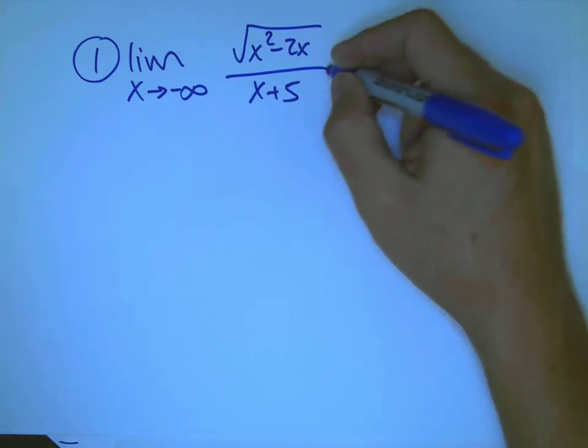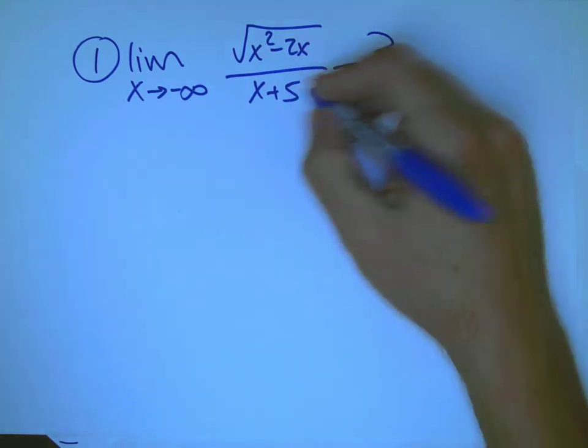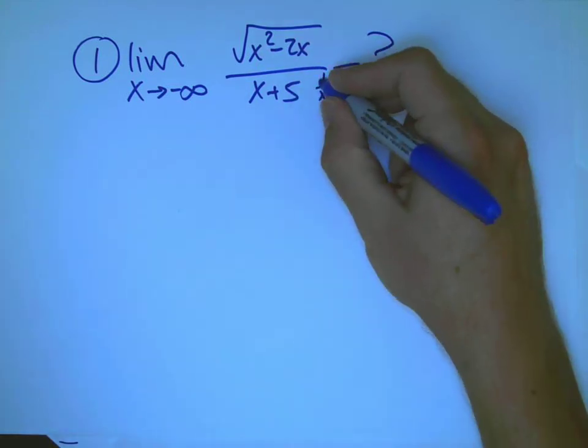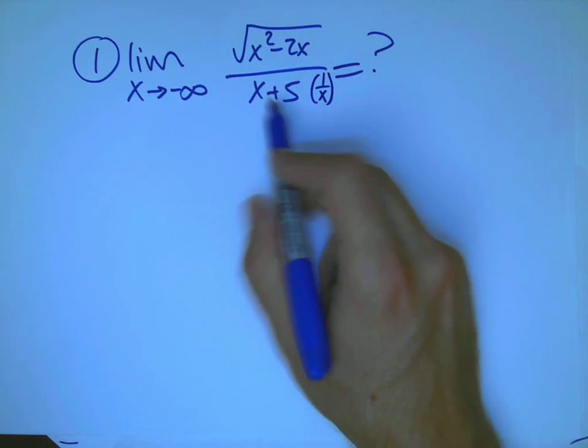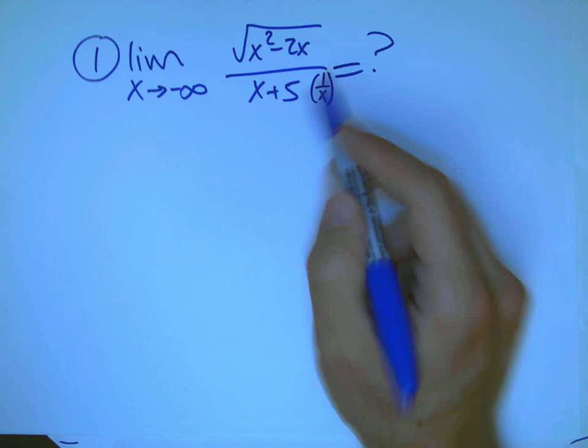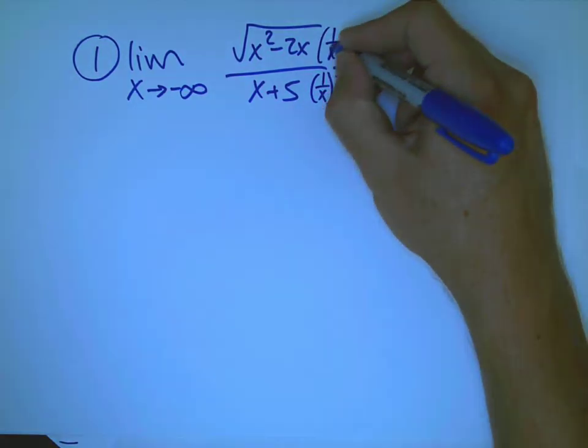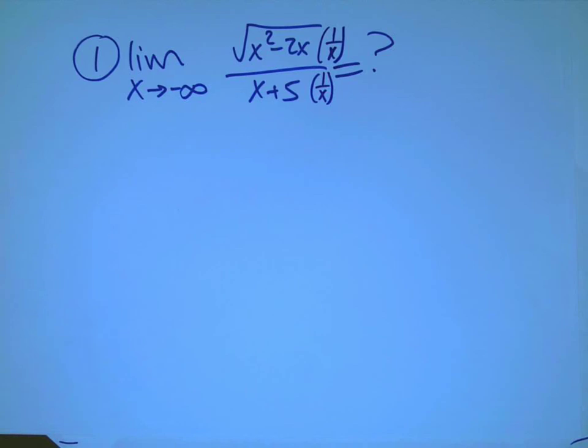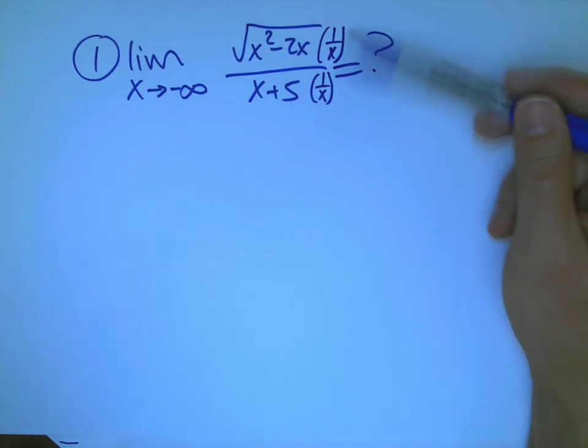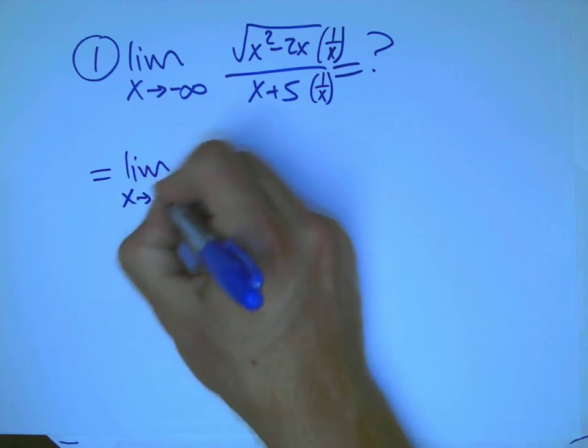So what we want to do is we want to multiply by the same power of x top and bottom. On the bottom, it's 1 over x because that's going to neutralize this guy to be finite, which is great, and it's going to turn that into 5 over x, which is going to 0. So therefore, we want that to be 1 over x on the top.